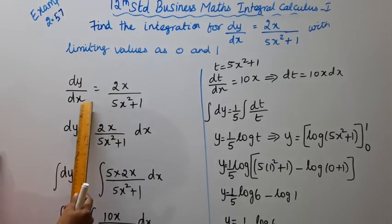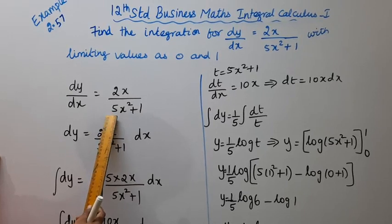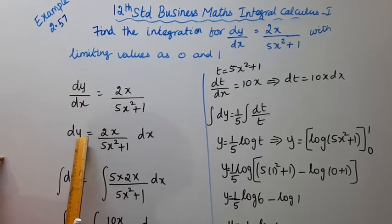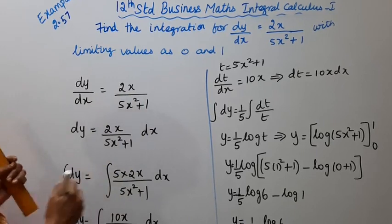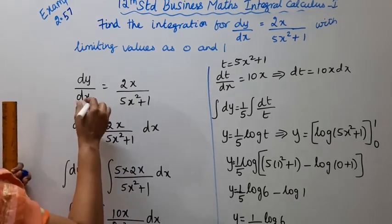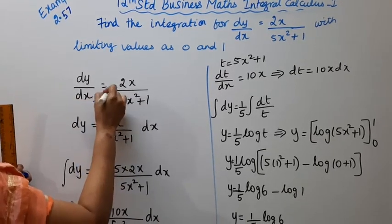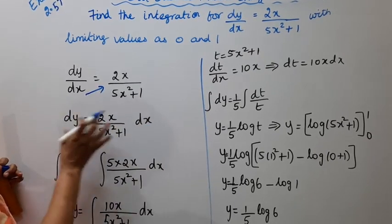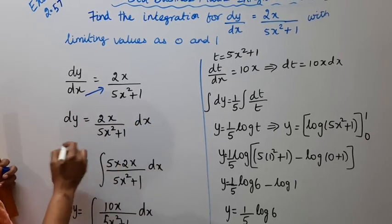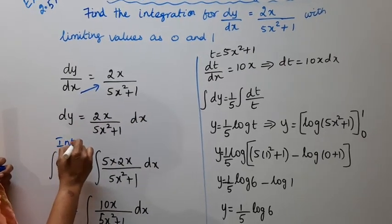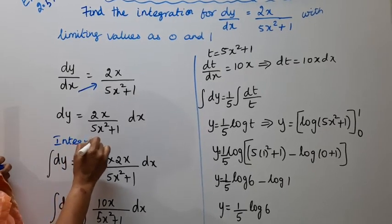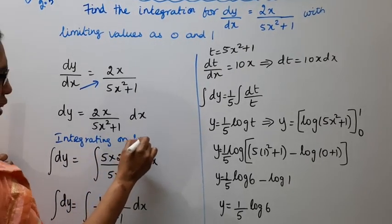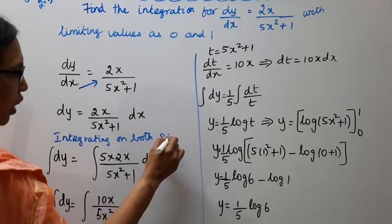Now, dy by dx equal to 2x by 5x squared plus 1. We take dy equal to 2x by 5x squared plus 1, and bring dx to that side. Then we integrate. Integrating on both sides — left hand side and right hand side.